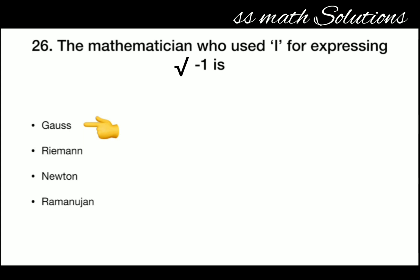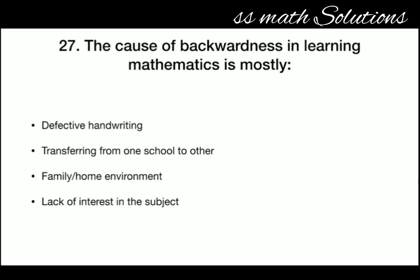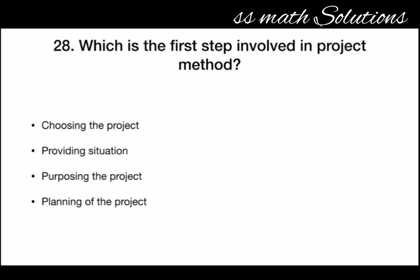The cause of backwardness in learning mathematics is mostly — defective handwriting, transferring from one school to another, family or home environment, or lack of interest in the subject? The answer is lack of interest in the subject.